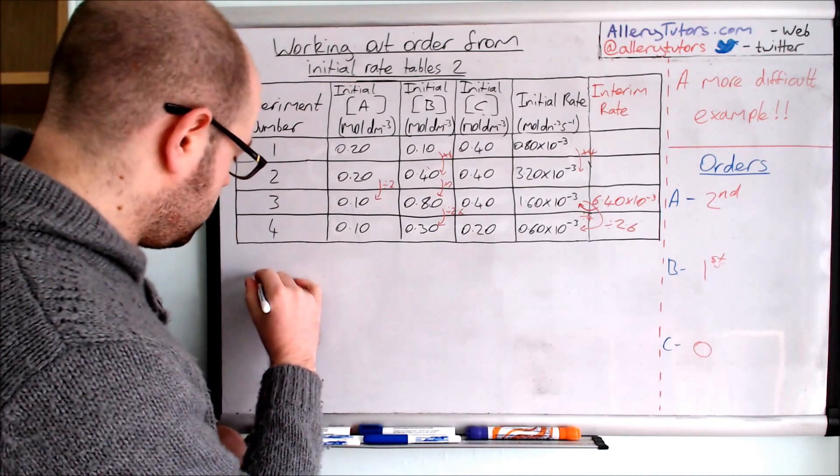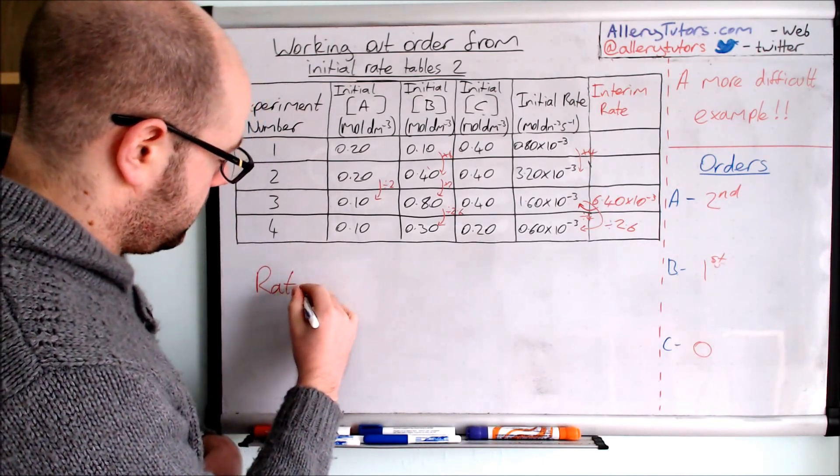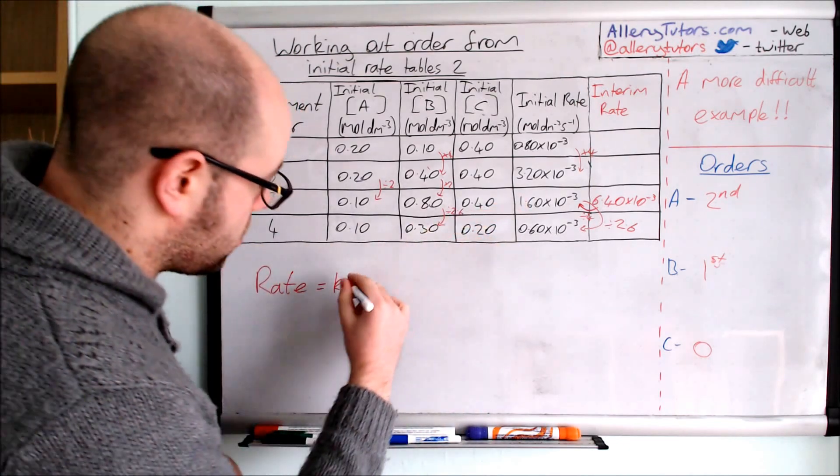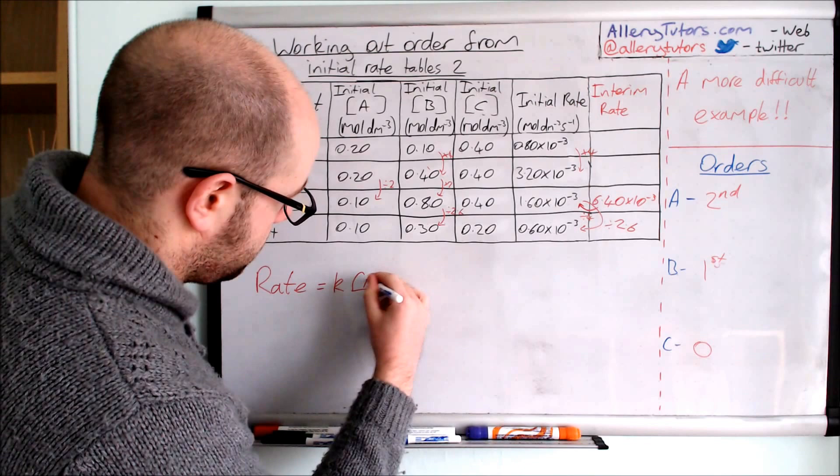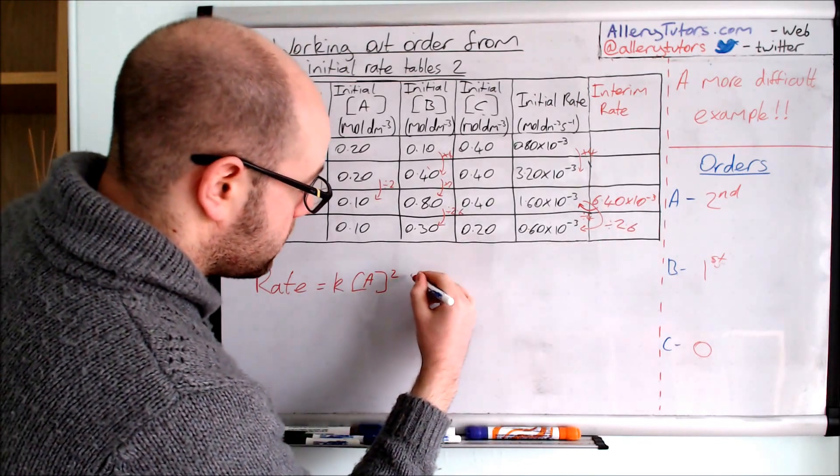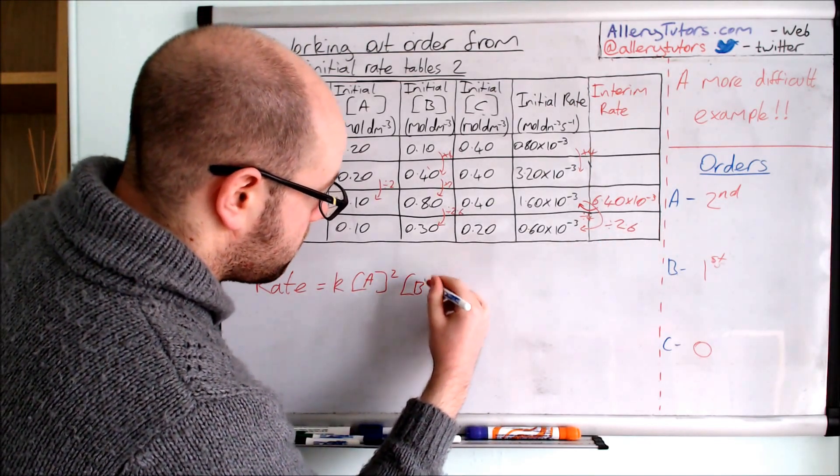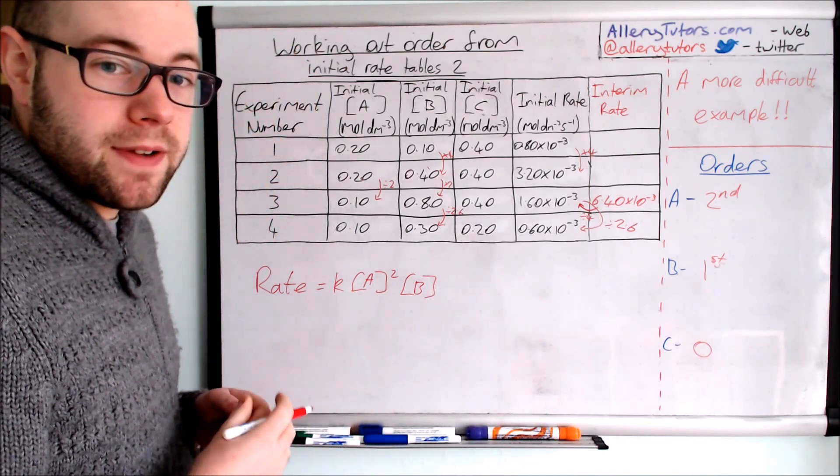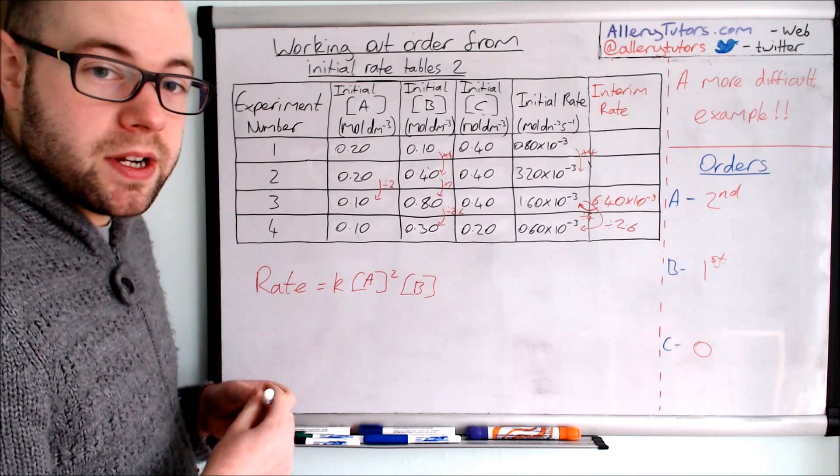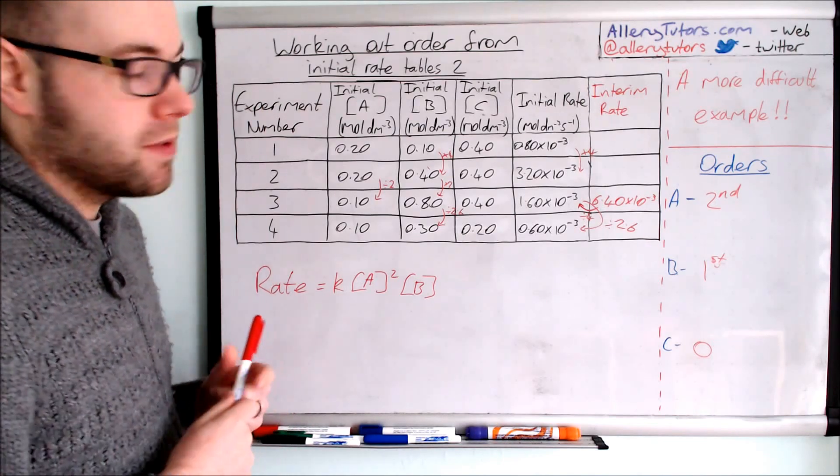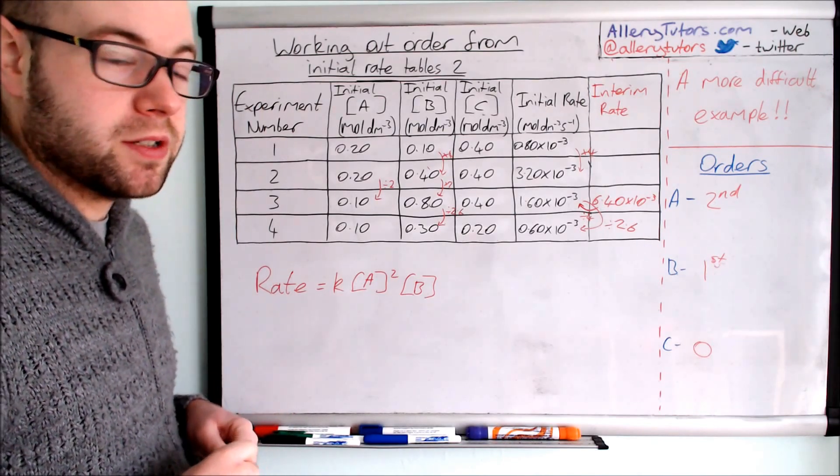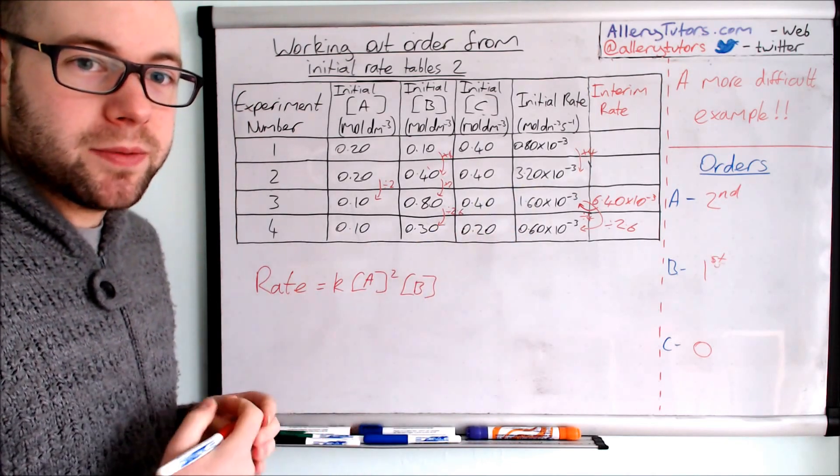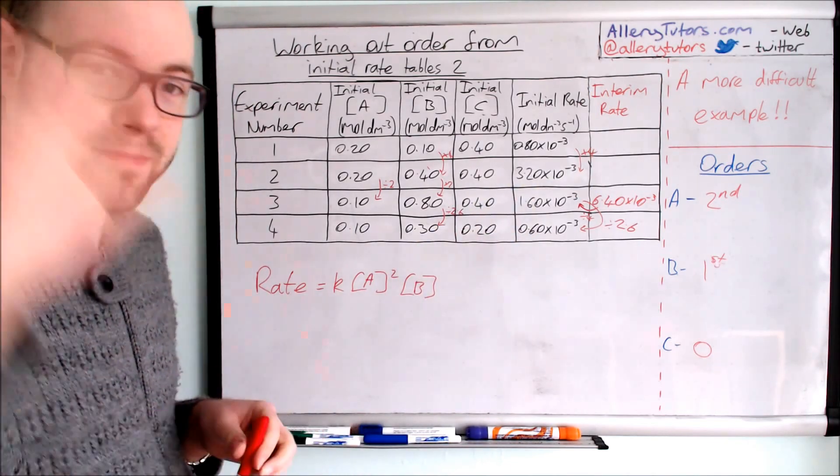So the rate equation: rate equals K, which is the rate constant, times concentration of A squared because it's second order, times the concentration of B. Nothing on there because that's just first order. C doesn't have any effect, so we don't include C in our rate equation. But there we go, a tougher example, quite a few marks. Make sure you use this interim rate because it really helps to make sure you've got all the numbers there. But that's it. Bye-bye.